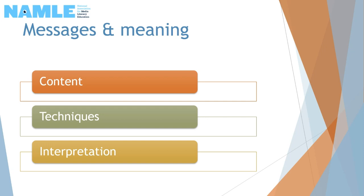The second category is messages and meaning. They ask questions about the content, techniques, and interpretation. So what does the message want me to think or learn? This includes ideas, values, information, and viewpoints. What information is left out? What techniques did they use and why? And how might different people understand or perceive this message differently?